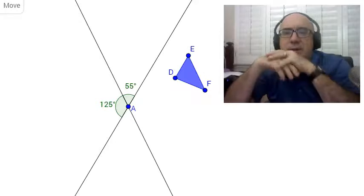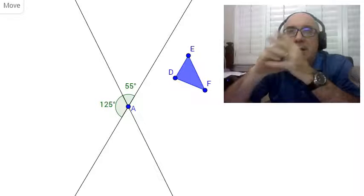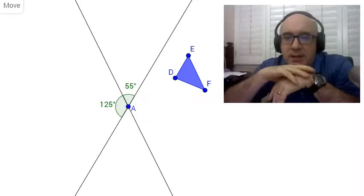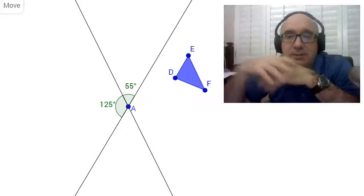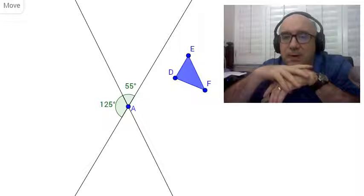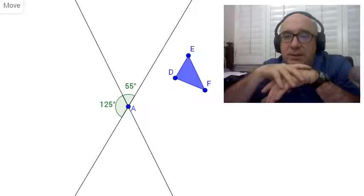Let's talk about a tricky concept here for a minute. Sometimes in a double reflection over intersecting lines, because it's a rotation, there's potentially two answers, or at least two ways to get there.